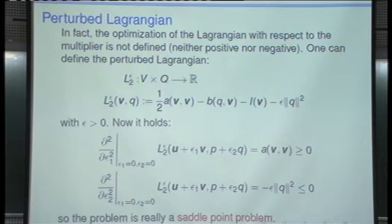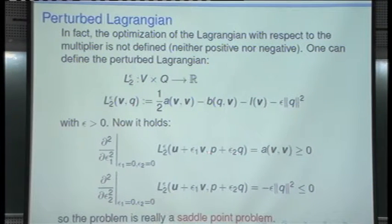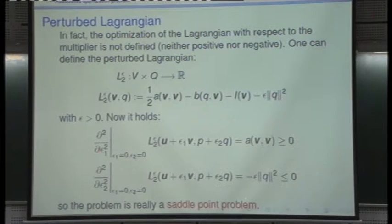Does everybody understand that this is the boundary value problem associated to the optimization of the perturbed Lagrangian? This boundary value problem is exactly equivalent to the penalized one. Why? Because if from the second equation you isolate the pressure — the pressure is minus one over epsilon times the divergence of u_epsilon — and insert that into the first equation, you get exactly the same system. So we have arrived at the same boundary value problem from different motivations.